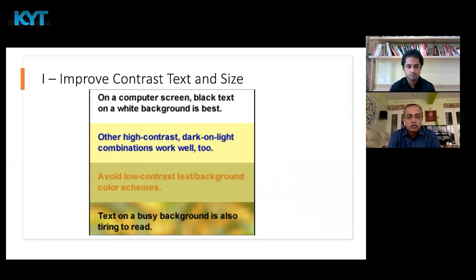So we should choose the font size and text size properly. G stands for Glare. Whenever people are working in an office atmosphere exposed to the exterior, that glare is going to give problems to the eyes. We may not realize it — it is subtle — but somebody working there for eight hours will definitely suffer.